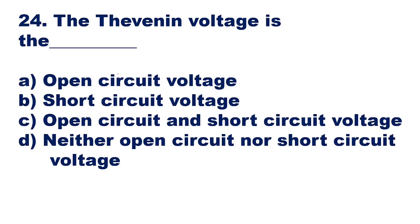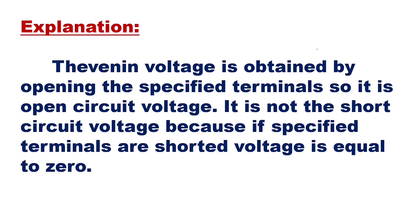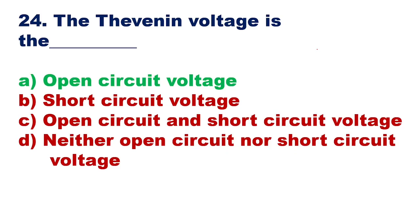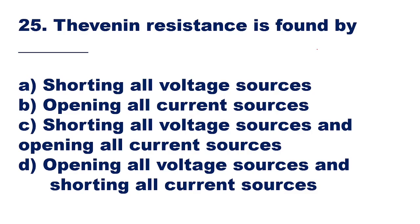Question 24: Thevenin's voltage is the dash — options are open circuit voltage, short circuit voltage, both, or neither. Thevenin's voltage is obtained by keeping the output terminal open and measuring the voltage, so it is open circuit voltage. Option A, open circuit voltage, is the right answer. If terminals are shorted, voltage equals zero.